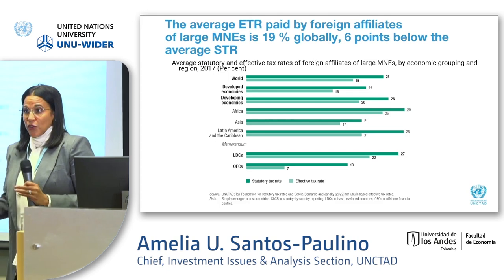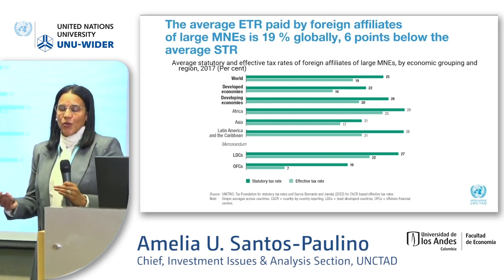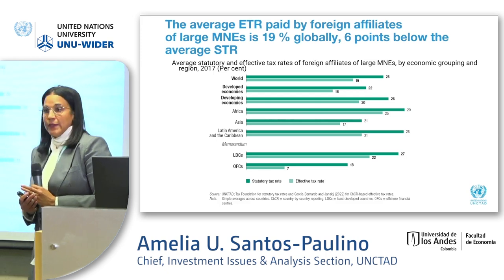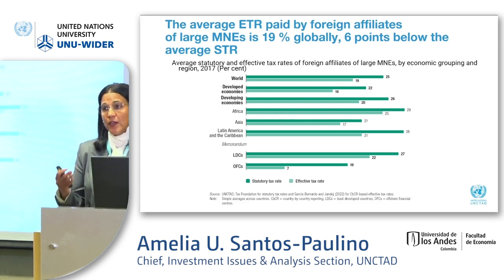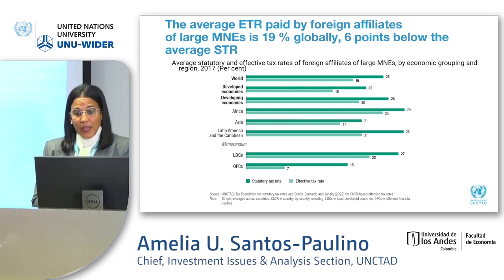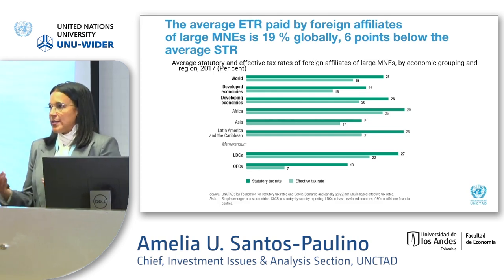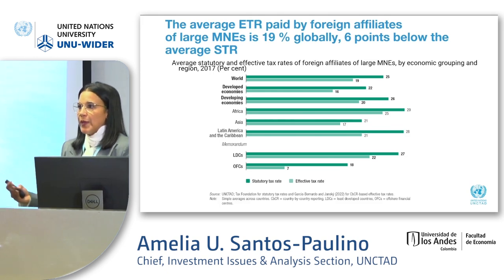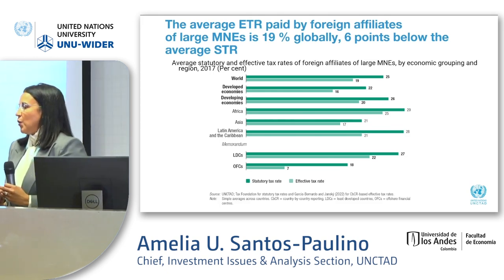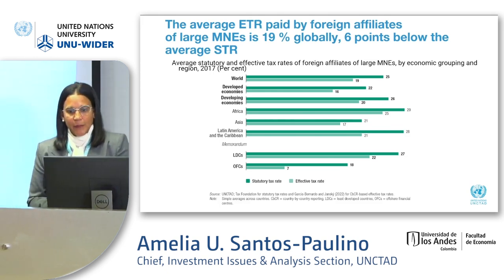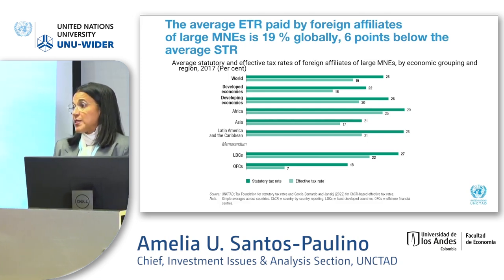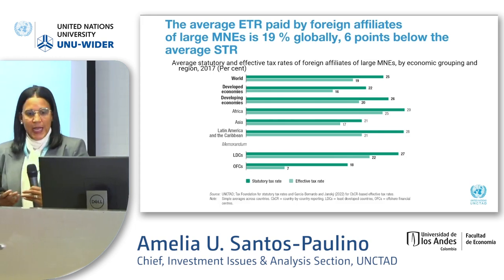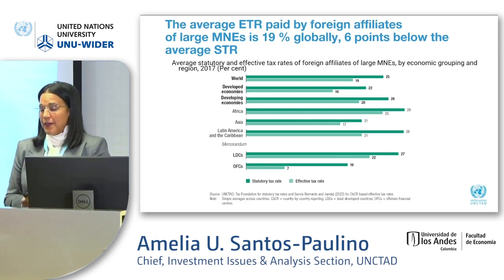So what we did was use country-by-country reporting data. Those that work with micro data know it's very difficult to find firm-level data. We computed at the country level what the effective tax rate is, and then we did some grouping averages for the sake of looking at developing country impact. Our analysis covers 208 countries, of which 53 are developed and 155 are developing.